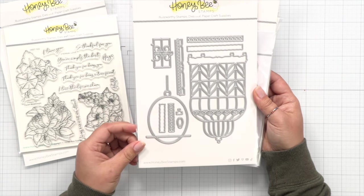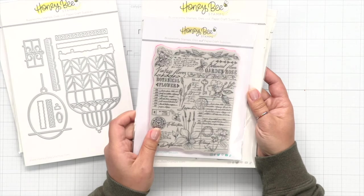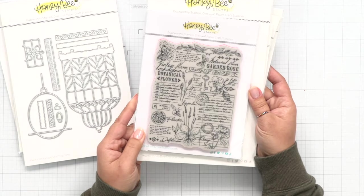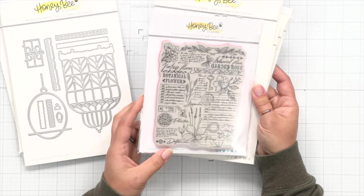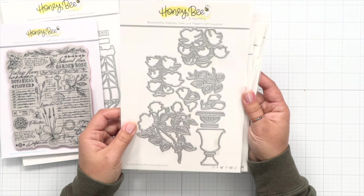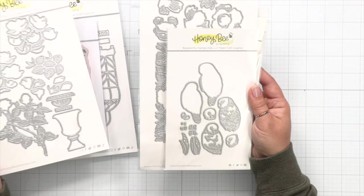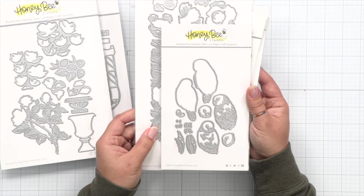That first floral set is called Eternal Love and it's actually illustrated by Dawn from WPlus9. Then we have some new Lovely Layers dies that I'm using in this release. That first one there was the Birdcage and then we have a Vintage Flora Red Rubber stamp. It's going to be great for backgrounds and floral designs.